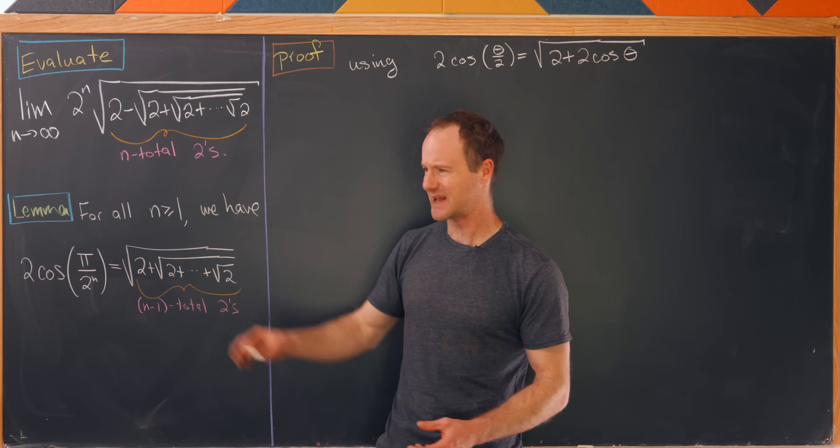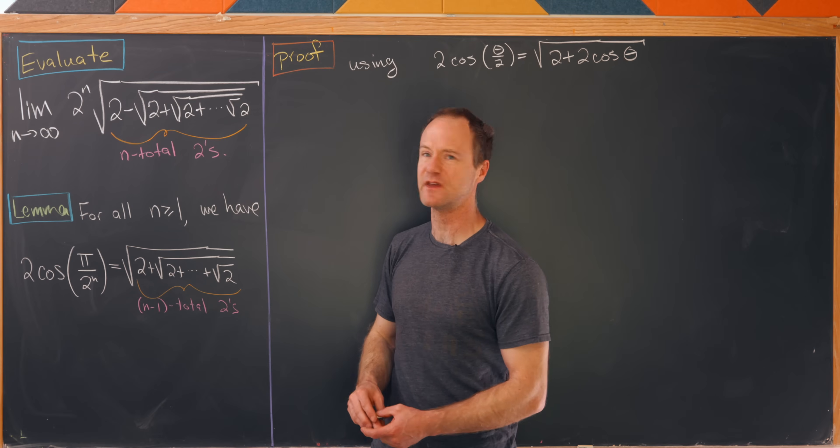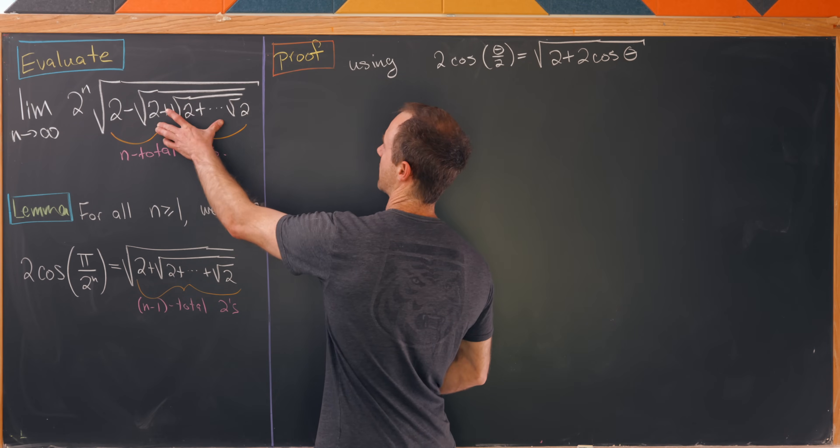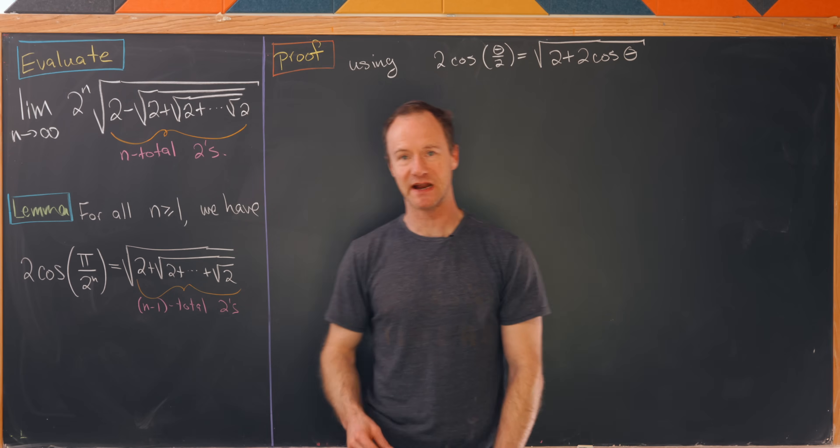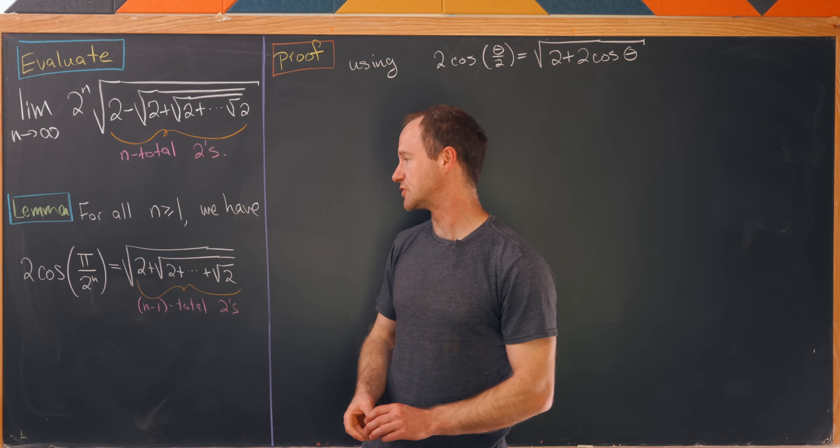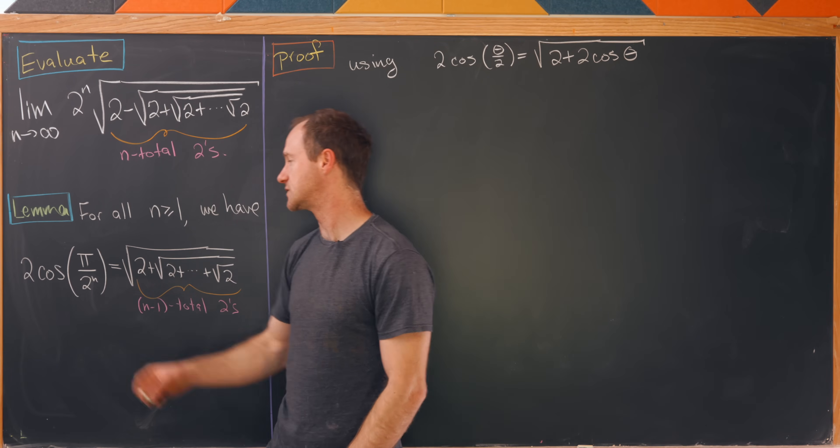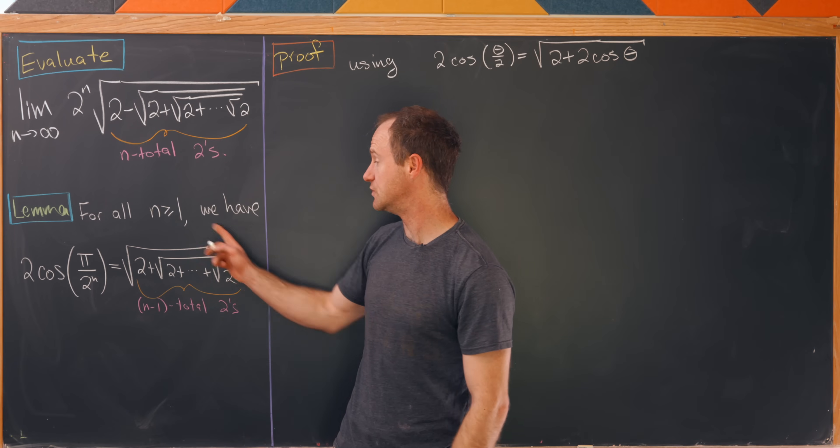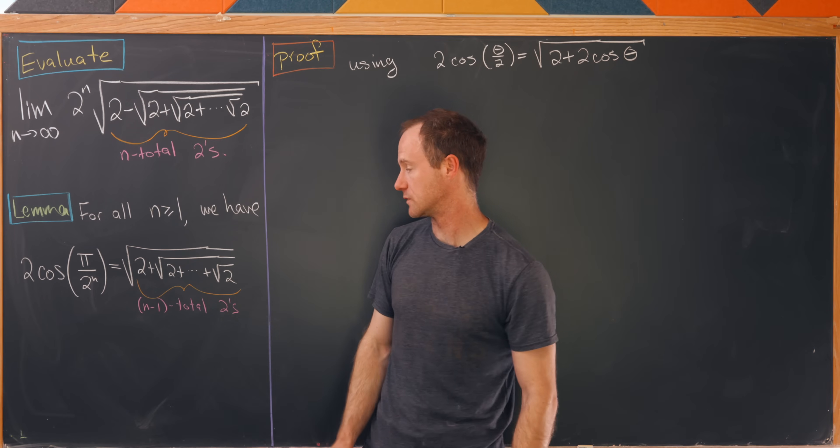First we'd like to get a handle on what's going on here, and I think maybe the easiest way to do that is to split off the portion that does not have the minus sign. That's the subject of this first lemma. For all n greater than or equal to 1, 2 times the cosine of pi over 2 to the n is equal to this nested sum of square roots of 2.